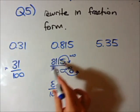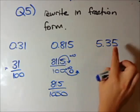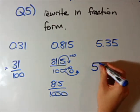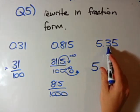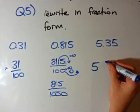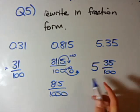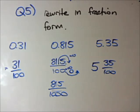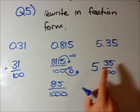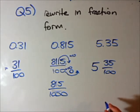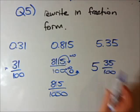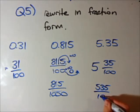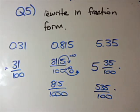This last one is 5.35. We have 5 full numbers, so we write 5 out front. Then 0.35 is 35 over 100, giving us 5 and 35 over 100. If we want to convert this into one single fraction using the mixed number technique, we times 5 by 100 to get 500, plus 35, which is 535 over 100. Either form — the mixed number or 535 over 100 — can be your answer, whatever the teacher prefers.